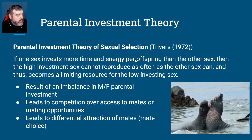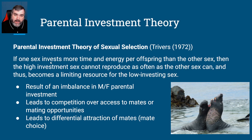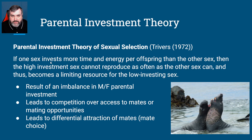Trivers in 1972 came up with what's called parental investment theory of sexual selection. Basically, it says that if one sex invests more time and energy per offspring than the other sex, then the high-investment sex is not able to reproduce as often as the low-investment sex, and thus the high-investment sex will become a limiting resource for the other sex.